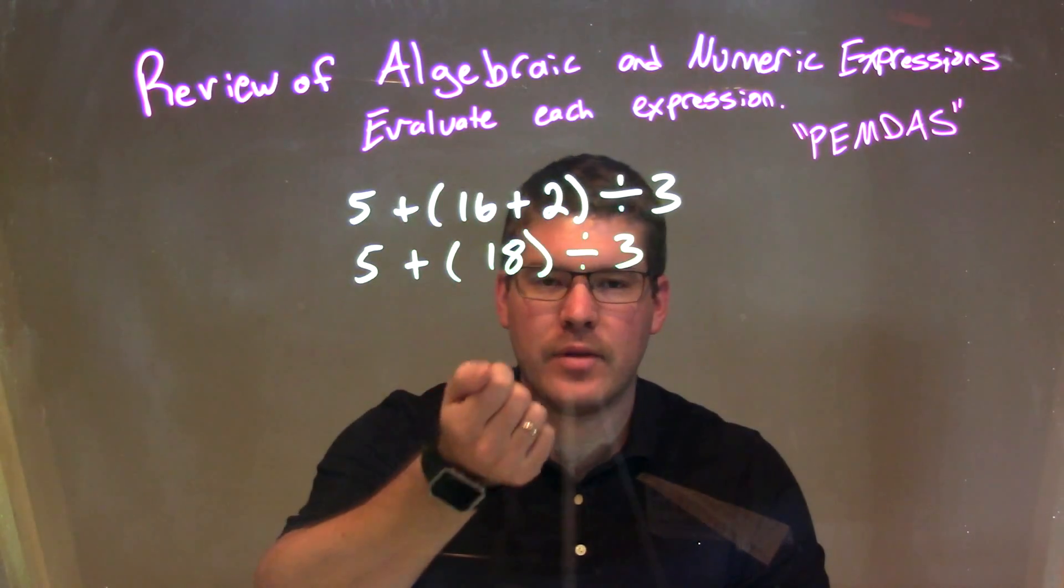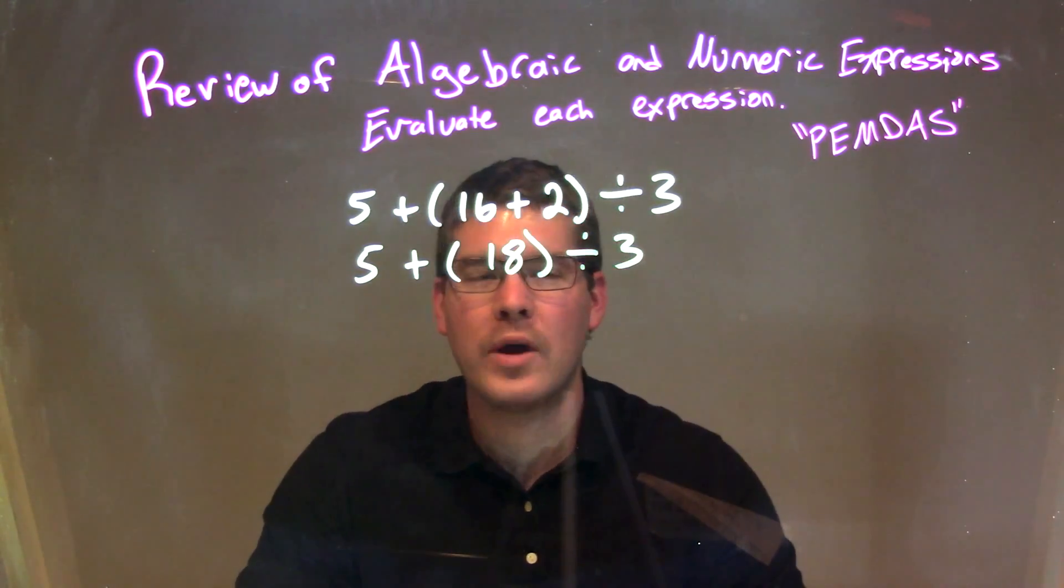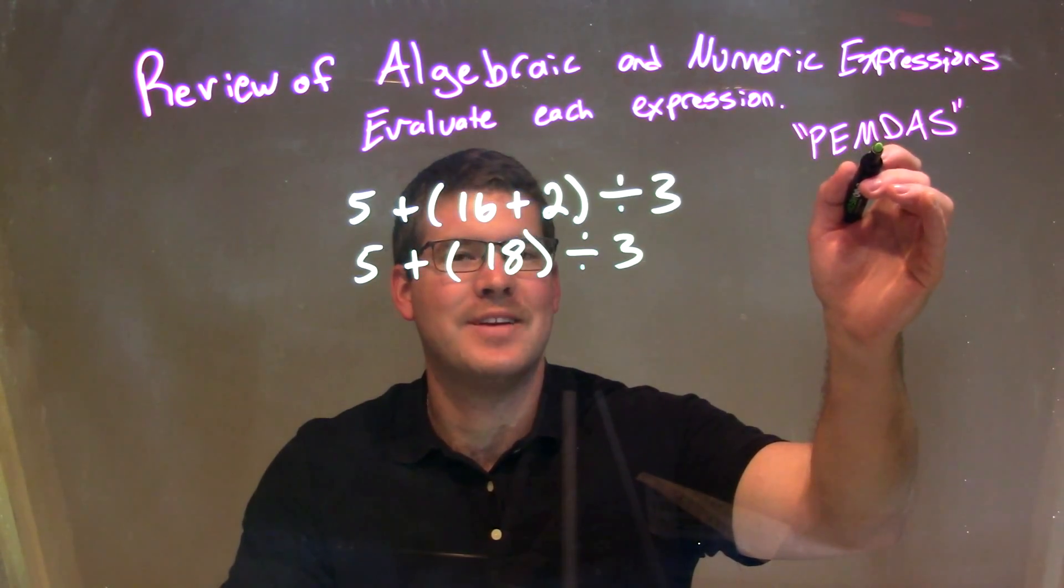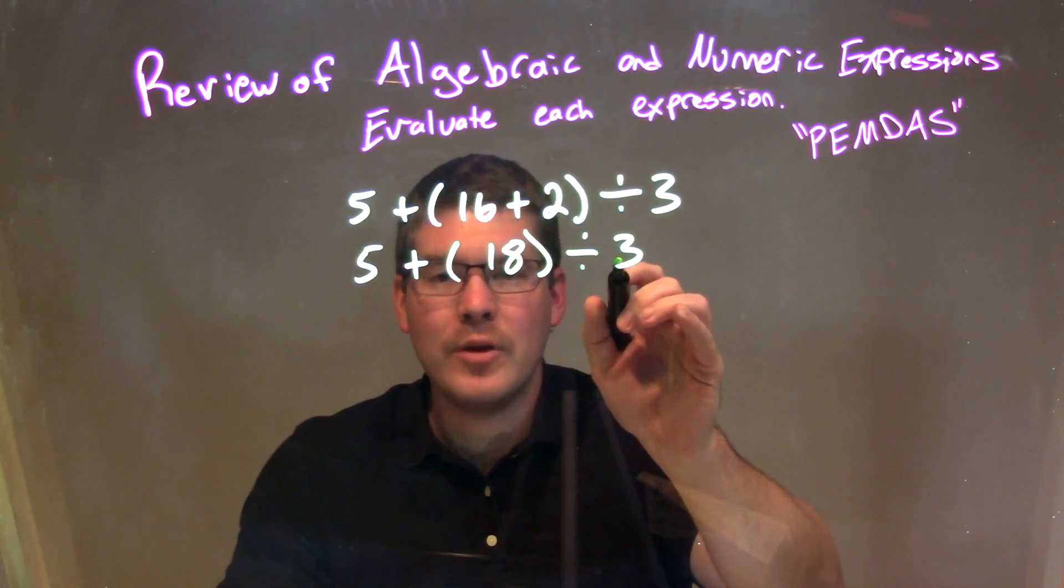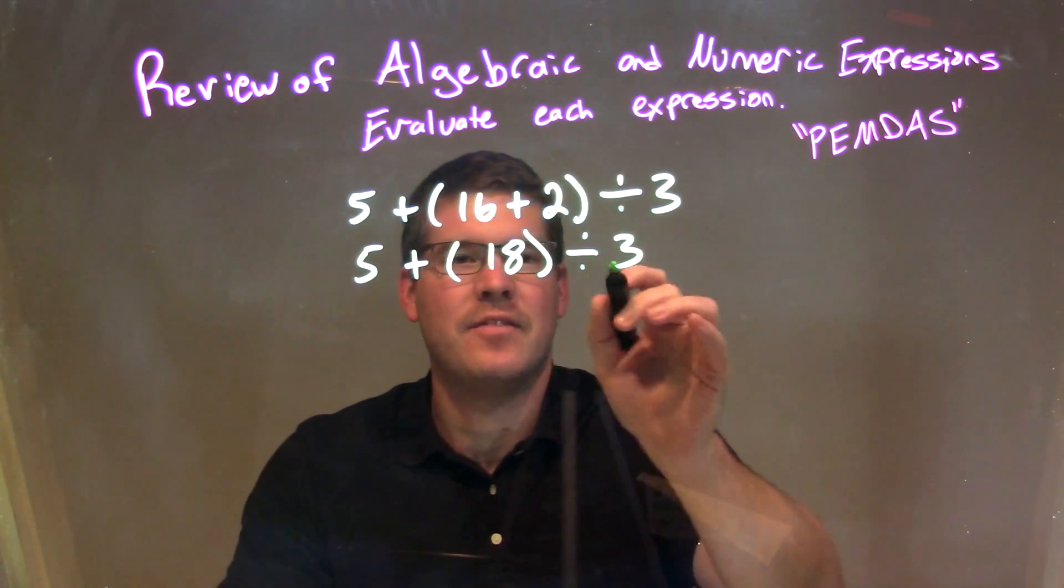Well, there's nothing inside the parenthesis that we can simplify, so we start working down the line. Exponents, none. Multiplication, division. Well, we have division, so we have to do that next. So 18 divided by 3 becomes our next step. 18 divided by 3 is 6.